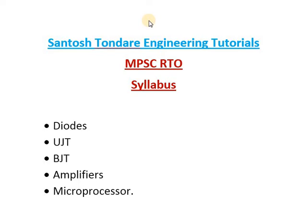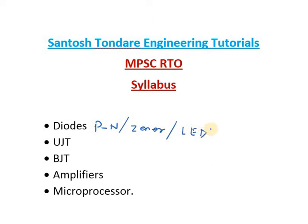The topics we will cover include diodes, microprocessors, and amplifiers. We have to discuss the diodes — specifically the PN junction diode, then the Zener diode, then the LED (light emitting diode), then the varactor diode, and then the tunnel diode. In case of diodes, these are the main types.